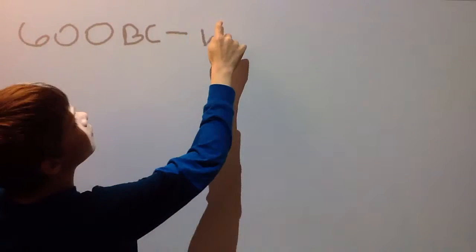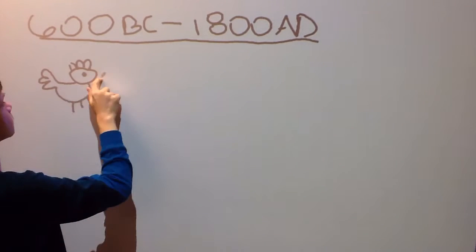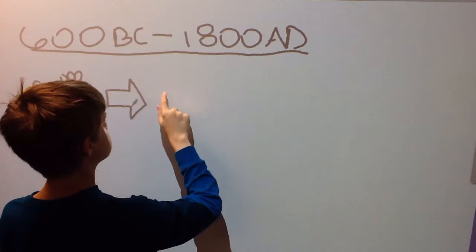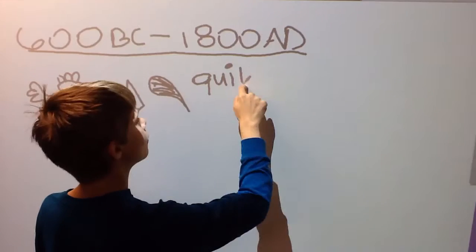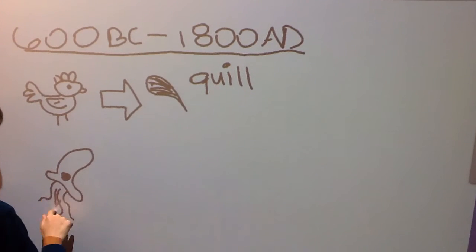In 600-1800 AD, Europeans discovered that the use of sharpened feathers changes the style of writing. They used a quill feather.